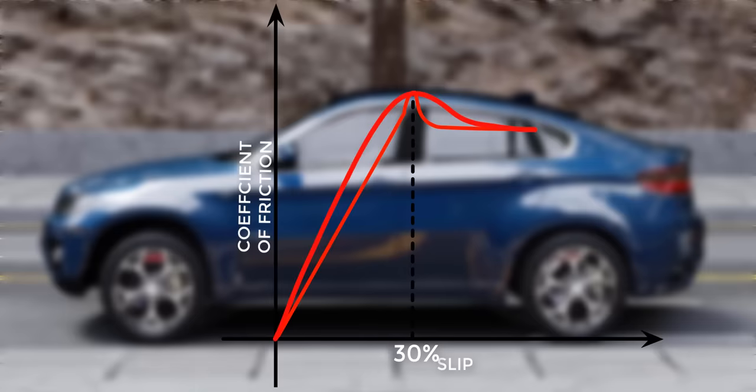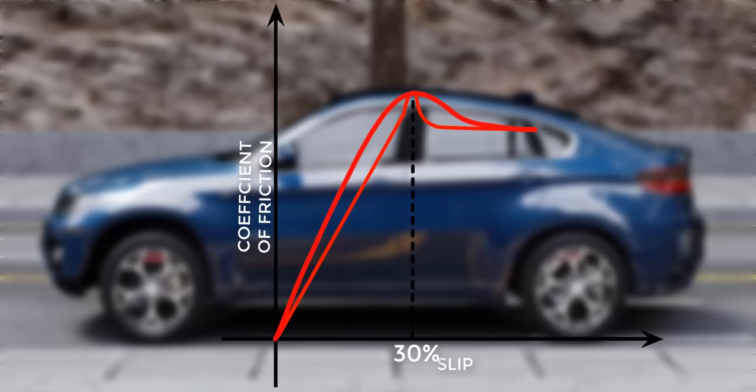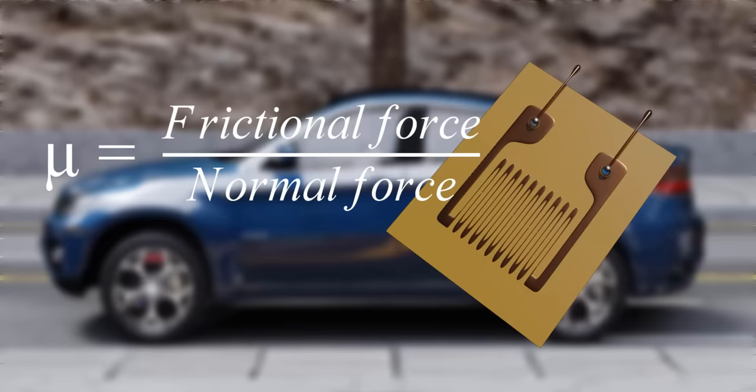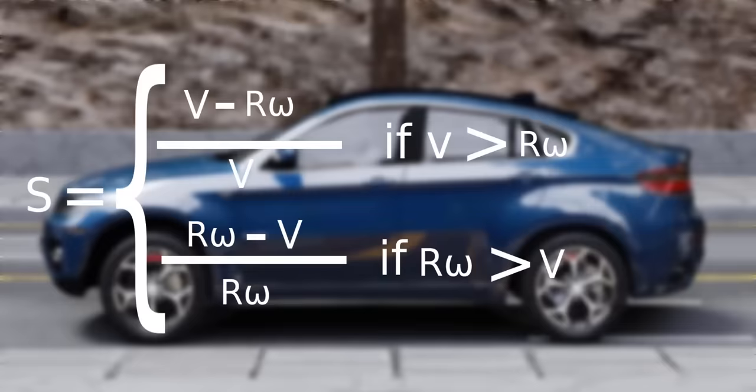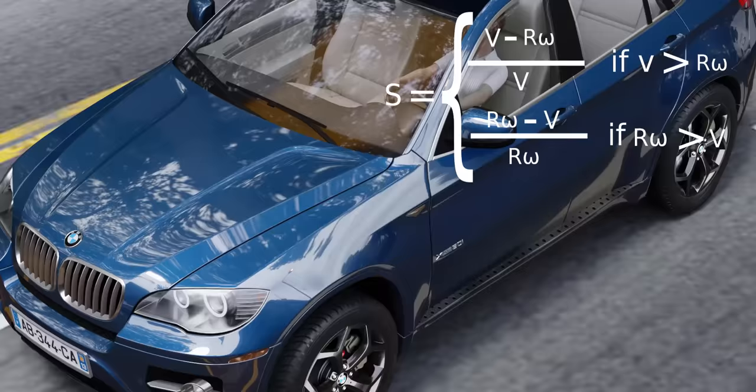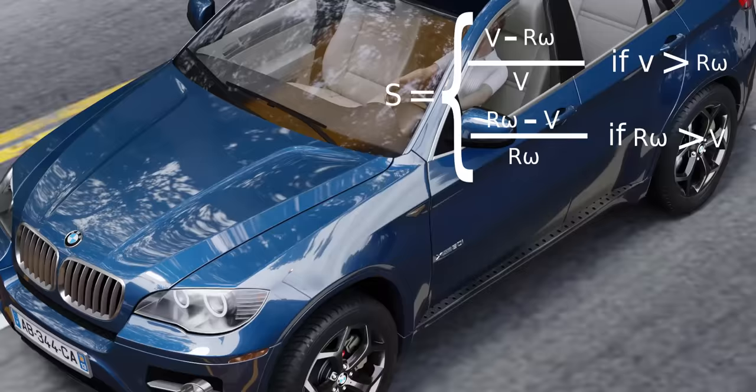Now we see how the frictional force and slip can be calculated experimentally. We know the formula for calculating friction. Brake torque sensors are used to measure the frictional force, and the normal force is measured using a strain gauge. Using these two values, the coefficient of friction is calculated. The slip ratio is calculated using corresponding equations. Both angular speed and translational velocity are measured using wheel speed sensors. The translational velocity is measured at non-braking wheels. However, when brakes are applied at all four wheels, a radar is used to estimate the translational velocity of the vehicle.